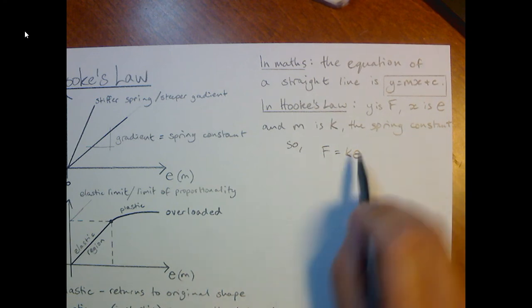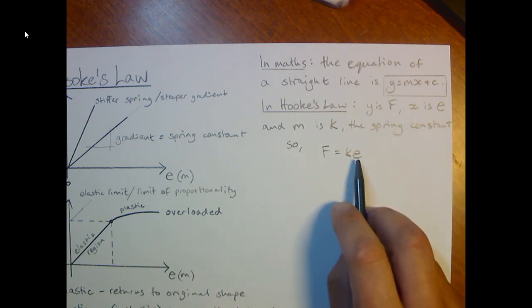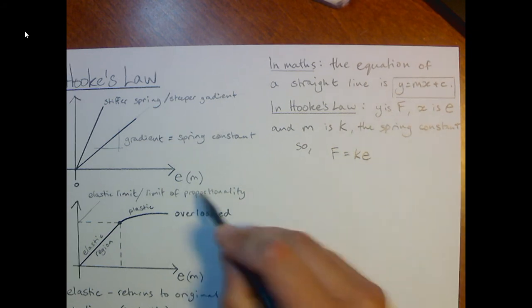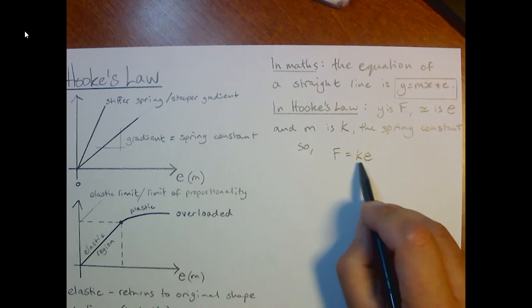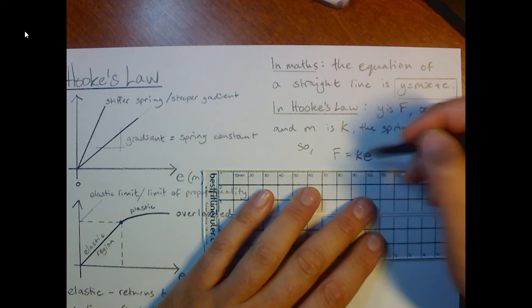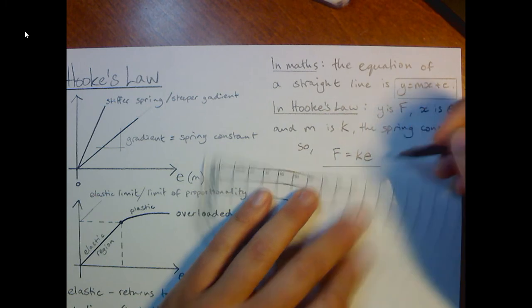In some textbooks, you might see F equals k x. I deliberately haven't done that, because the new AQA course will use e for the symbol for extension. So F equals k e is Hooke's law as an equation. And this is an equation that you're going to need to learn.